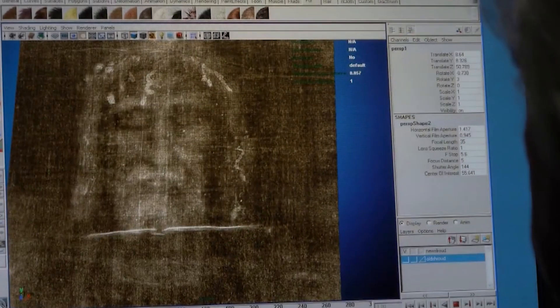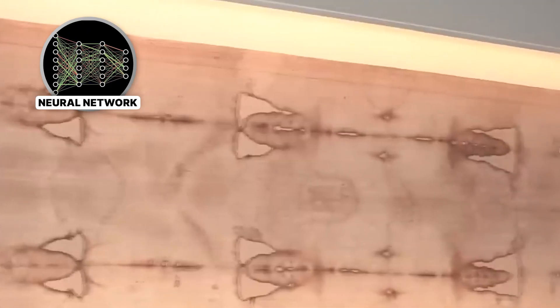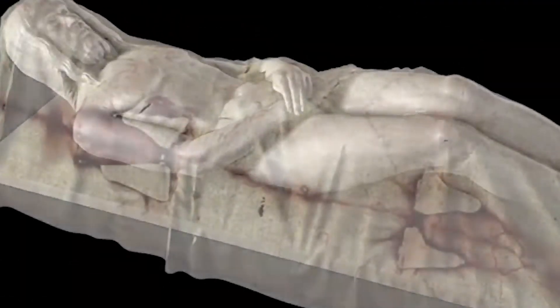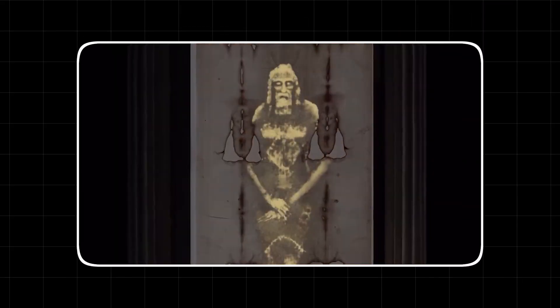A new analysis, led by a team of physicists and data scientists, has bypassed the old arguments. They fed ultra-high-resolution, multi-spectral scans of the Shroud into a powerful neural network, an AI designed to find patterns in chaos. The AI wasn't programmed with any religious or historical bias. Its only job was to analyze the data. What it found is something scientists are now openly admitting they cannot explain.